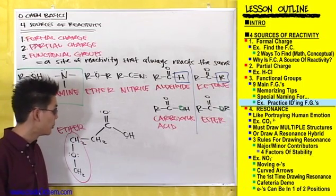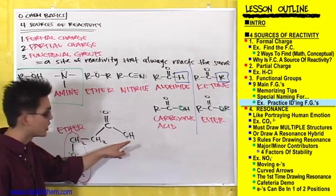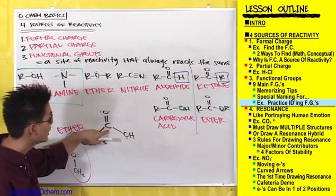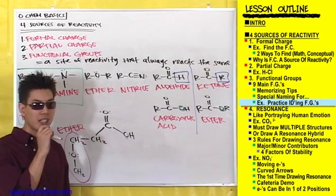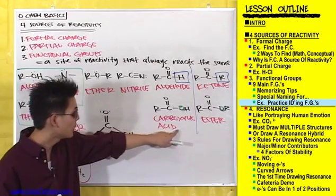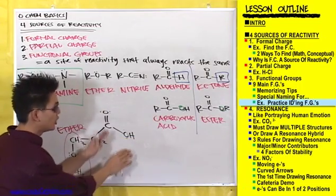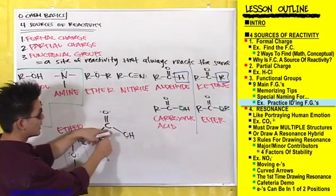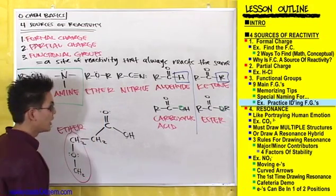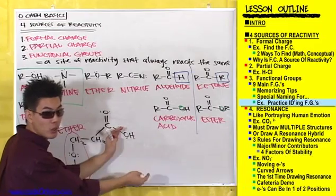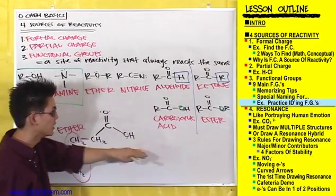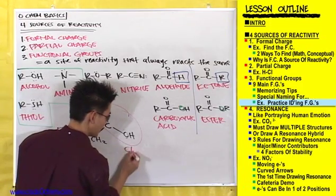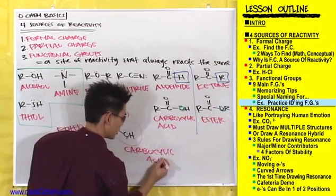Then look for other functional groups — here's an OH that looks like an alcohol. But make sure to check yourself, because this OH group is connected to a carbon that's double bonded to an oxygen. That should look familiar — it's a carboxylic acid. Yes, this OH is an alcohol, but it's a special one called a carboxylic acid because the OH is connected to a carbon that's double bonded to an oxygen. So you'd circle this and say it's a carboxylic acid.